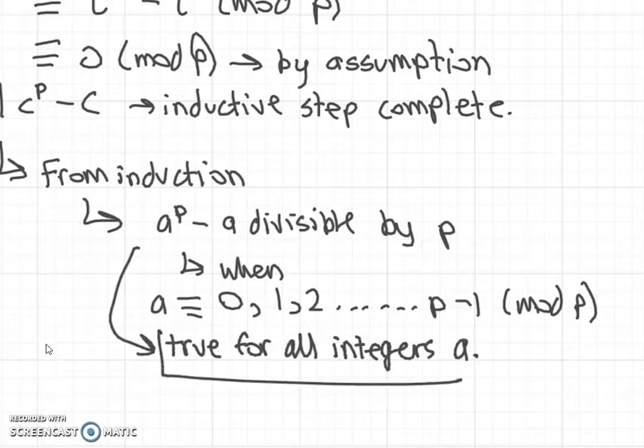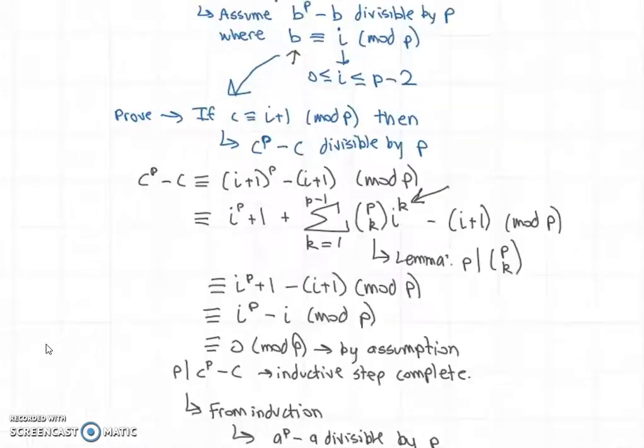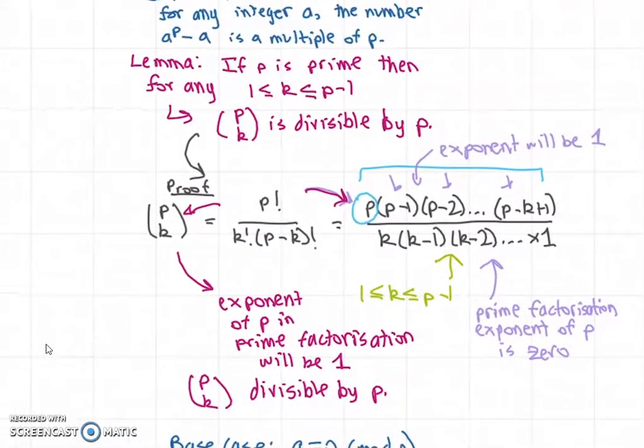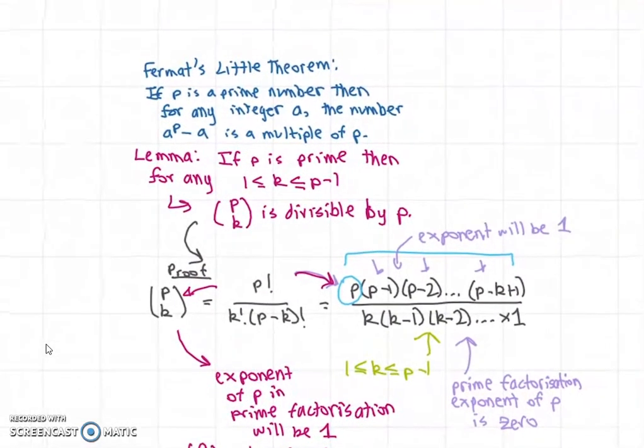So this completes the proof of Fermat's Little Theorem using mathematical induction and also this lemma involving p choose k. Hope you enjoyed this video. Thanks for watching and I'll see you next time.